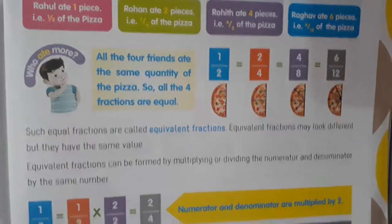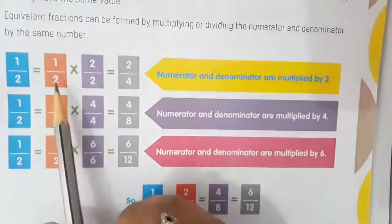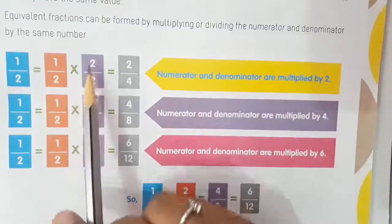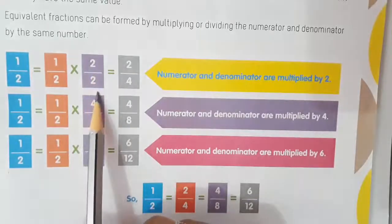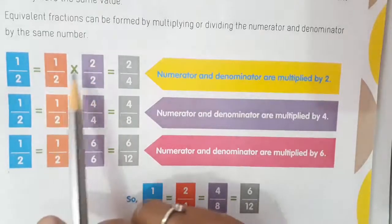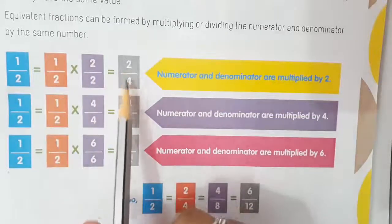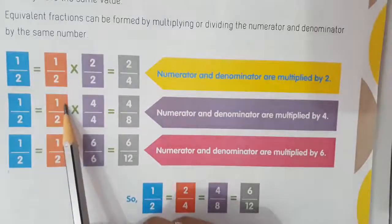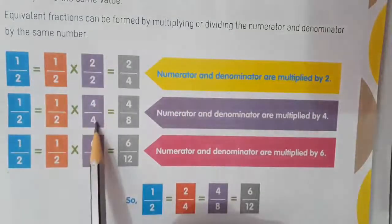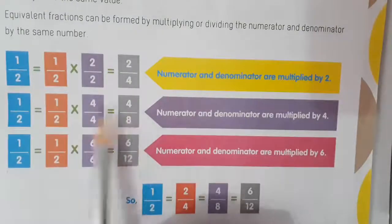See here: 1 by 2 is equal to 1 by 2 multiplied by 2 by 2. Here the numerator and denominator are multiplied by 2. So 1 times 2 is 2, and 2 times 2 is 4, giving us 2 by 4. The next one: 1 by 2 is equal to 1 by 2 multiplied by 4 by 4.